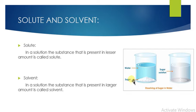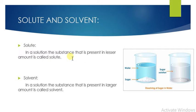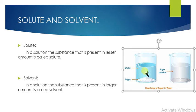Now let's look at the components of a solution. In the sugar and water example, sugar is present in a lesser amount and water is in a larger amount. In a solution, the substance present in a lesser amount is called the solute — so sugar is the solute. The substance present in a larger amount is called the solvent.